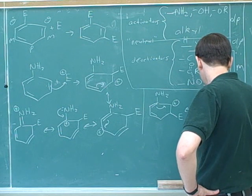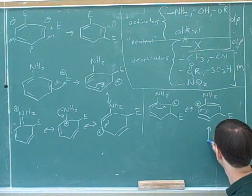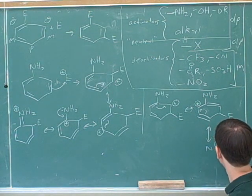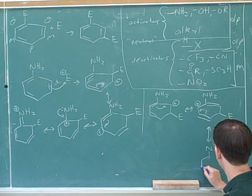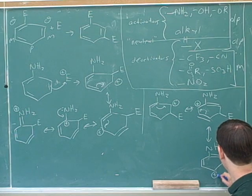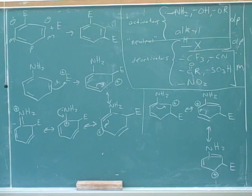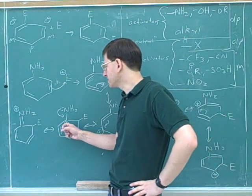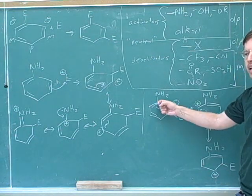So here we go. This is what the resonance structures would look like for a meta attack. So there's never one that's the best. Yeah, the best picture is when the positive charge is right next to the electron donor, but the positive charge is never on this carbon after the meta attack.